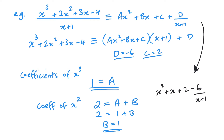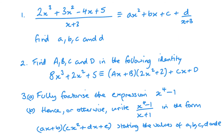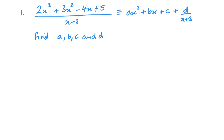Sometimes in the past specific methods were required, but now you can choose whichever method works best for you. It's certainly worth learning both, as some questions are easier one way than another. Here are three questions to try — pause the video now and then the answers will follow. For question 1, solving with long division: 2x cubed plus 3x squared minus 4x plus 5 over x plus 3.